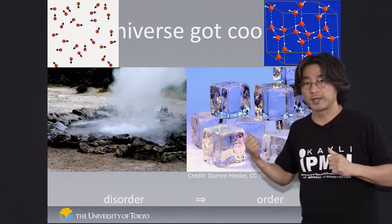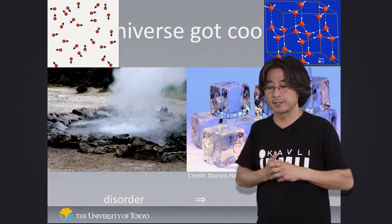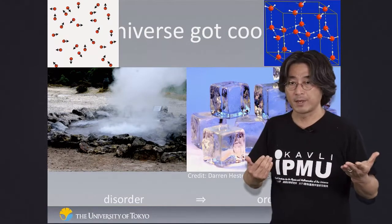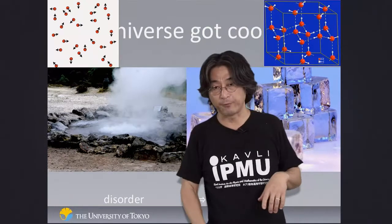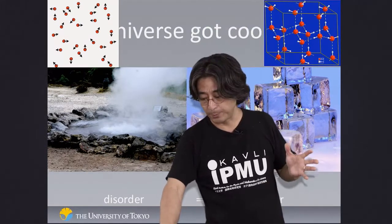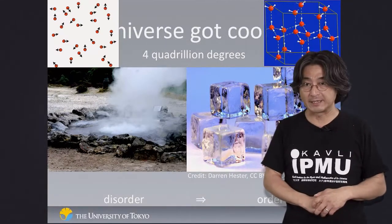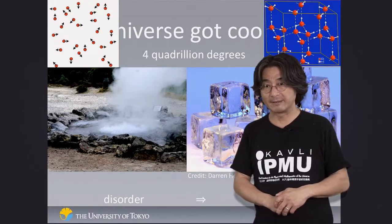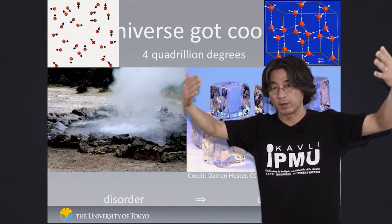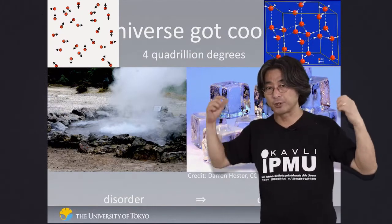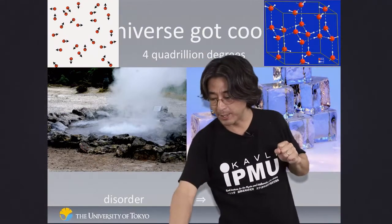In the case of ice, you need to cool it down to zero degrees Celsius to make it freeze. For the Higgs boson, the universe had to cool down to 4 quadrillion degrees for the Higgs boson to freeze in. It's still an incredibly high temperature, but it was much higher before. As it came down to this temperature, the Higgs boson froze into empty space — and that's the space we live in now.